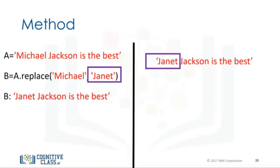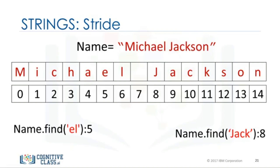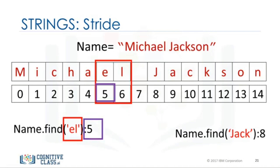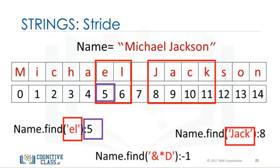The method find finds substrings. The argument is the substring you would like to find. The output is the first index of the sequence. We can find the substring jack. If the substring is not in the string, the output is negative 1. Check the labs for more examples.